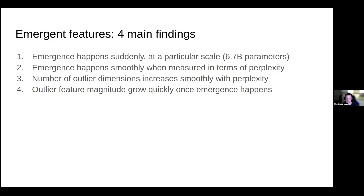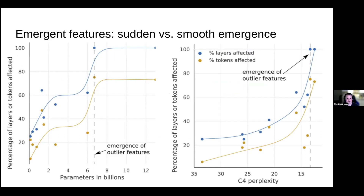For the first finding — sudden or smooth emergence — we have a plot showing in blue the proportion of layers affected. As I said, if 100% of layers have outliers, we consider that emergent. The token dimension also increases similarly but stops once all layers are affected. Looking at model size in billions of parameters, it increases a little then around 6 billion parameters it stops, then suddenly jumps to 100% around 6.7 billion and stays there. So the shift from 6 to 6.7 billion seems very rapid and sudden.